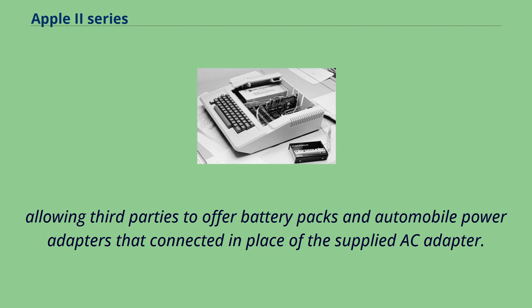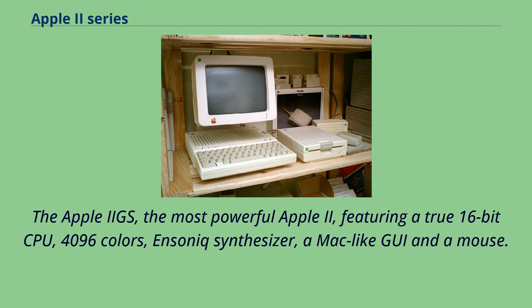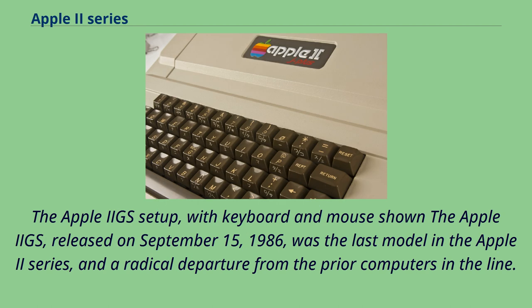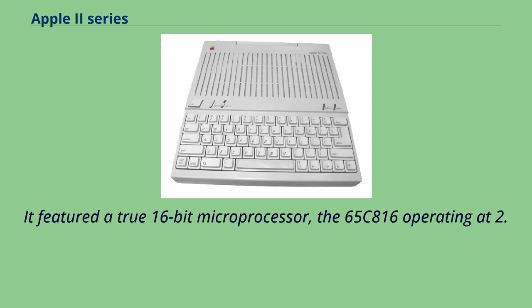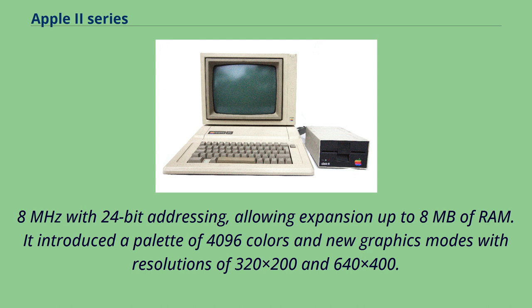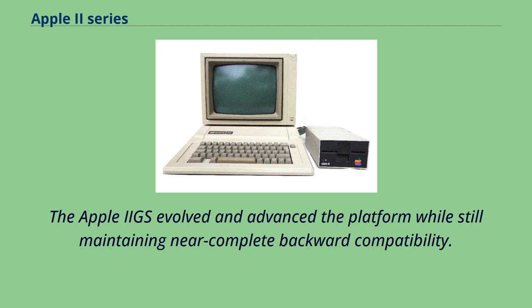The Apple IIgs was the most powerful Apple II, featuring a true 16-bit CPU, 4096 colors, a Sonic synthesizer, a Mac-like GUI, and a mouse. Released on September 15, 1986, it was a radical departure from prior computers in the line, featuring the 65C816 operating at 2.8 MHz with 24-bit addressing, allowing expansion up to 8MB of RAM. It introduced a palette of 4096 colors and new graphics modes with resolutions of 320×200 and 640×400, while maintaining near-complete backward compatibility through its Mega II chip, which contained the functional equivalent of an entire Apple II computer.